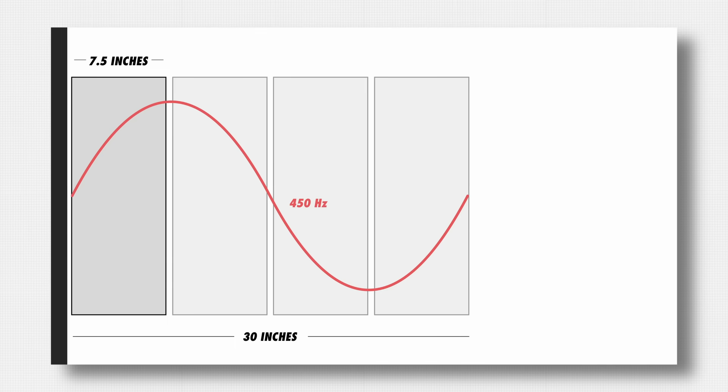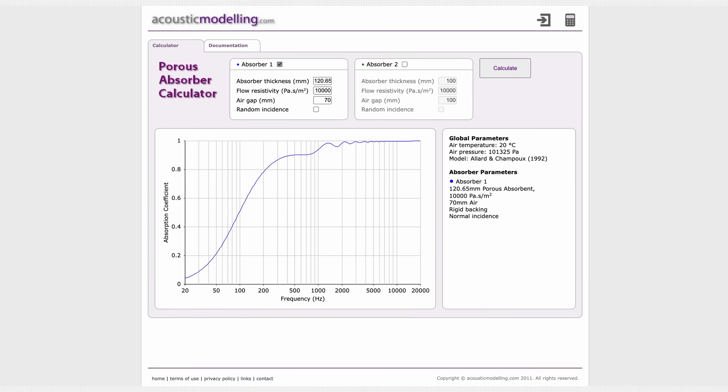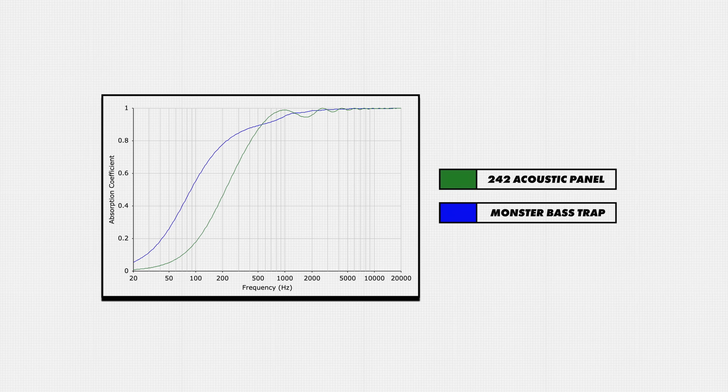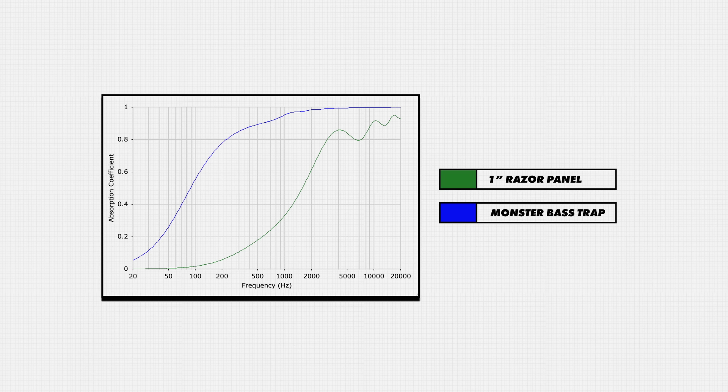One important thing to understand is that you can use any thickness panel you want, but your results will vary. A helpful guideline is the quarter-wavelength principle: the thickness of the panel should be at least 25% of the lowest wavelength you wish to absorb. Comparing the 7.3-inch monster bass trap to the 3.6-inch 242 panel, the monster bass trap's absorption extends further into the lower frequencies. Using an even thinner panel, such as the 1-inch razor panel, means you'll only absorb the highest frequencies — which for music can exacerbate midrange problems by leaving lower frequencies to reflect.